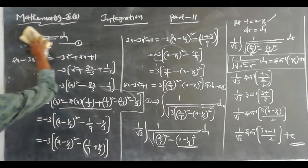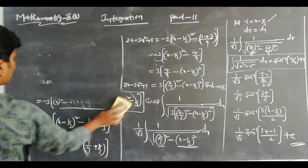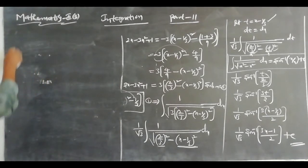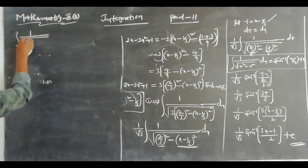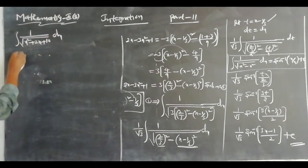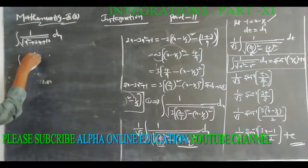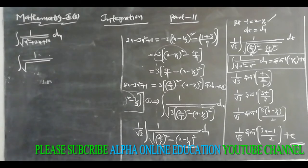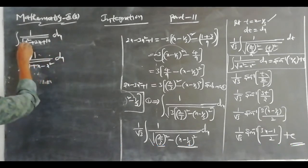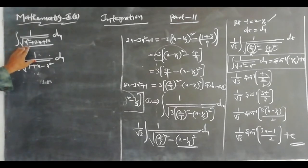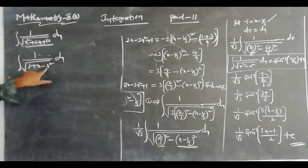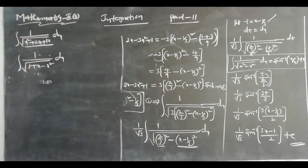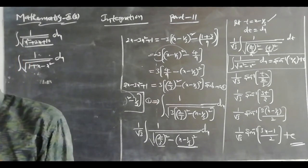Assignment problems: (1) ∫1/√(x² + 2x + 10) dx. (2) ∫1/√(1 + x - x²) dx. For the second one, the coefficient of x² is -1, so factor out -1 and proceed as before. This is Method 2 of integration. Thank you.